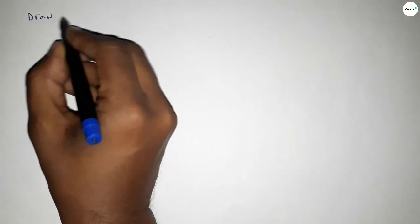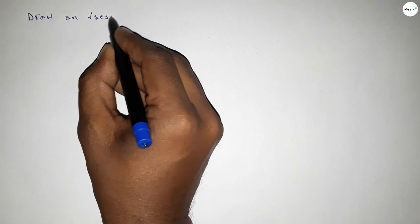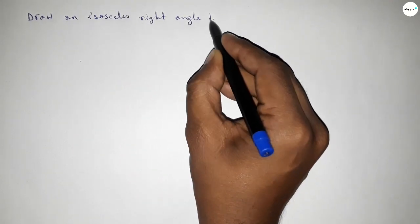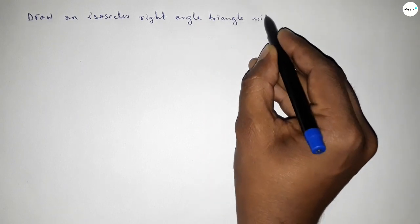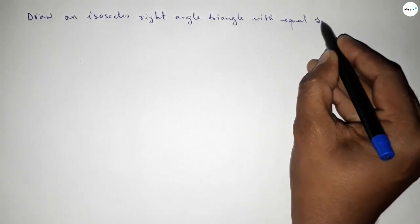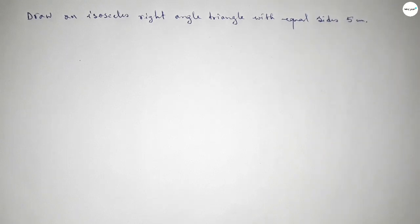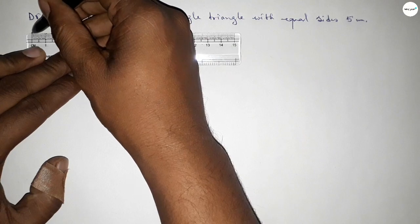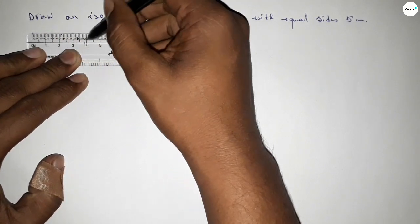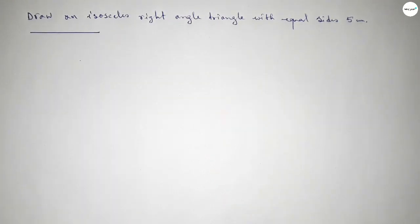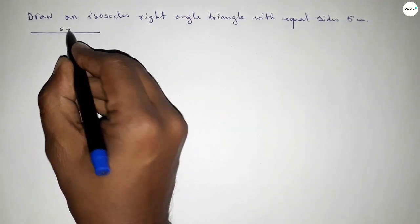Hi everyone, welcome to SI Share Classes. Today in this video we have to draw an isosceles right-angle triangle with two equal sides of 5 centimeters. So constructing an isosceles right-angle triangle — let's start the video. First of all, we have to draw a line of length 5 centimeters.